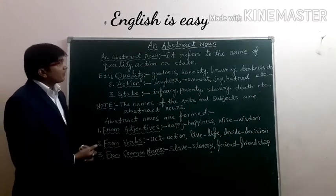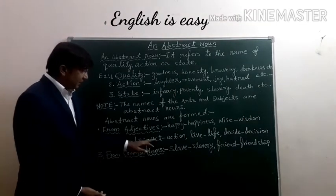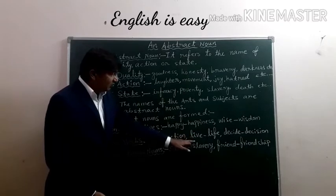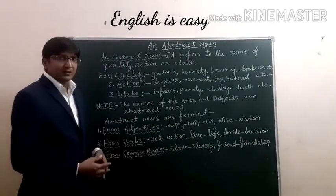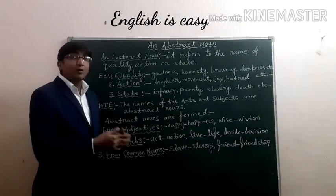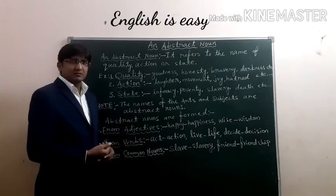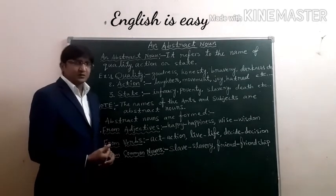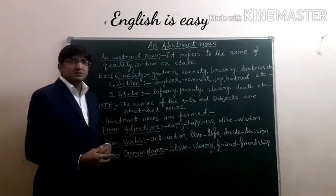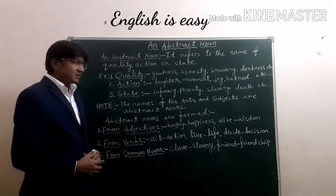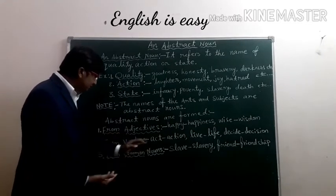Secondly, we can also form abstract nouns from verbs. For example: act → action, live → life, decide → decision, obey → obedience, arrange → arrangement, invite → invitation, celebrate → celebration, move → movement. We can say many more examples for words formed from verbs.